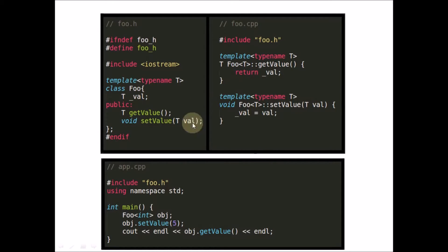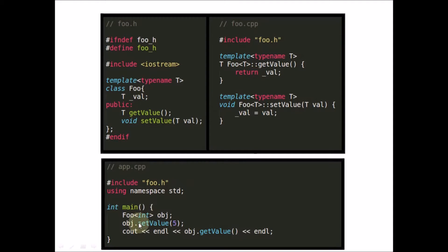This is our application, our main function. We want to instantiate this foo with integer, so T will be replaced with integer and all these T's will get replaced with integer. That's how templates work. But if you compile this code it won't work.